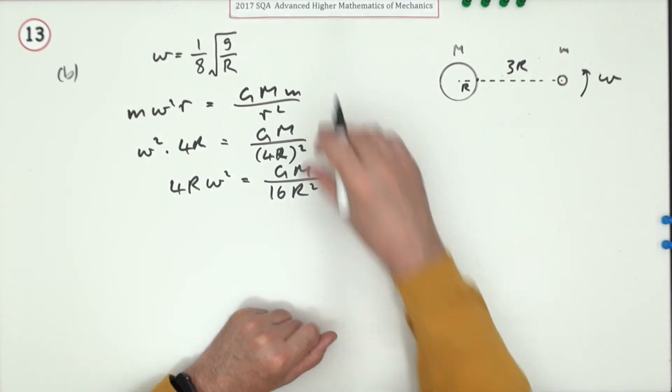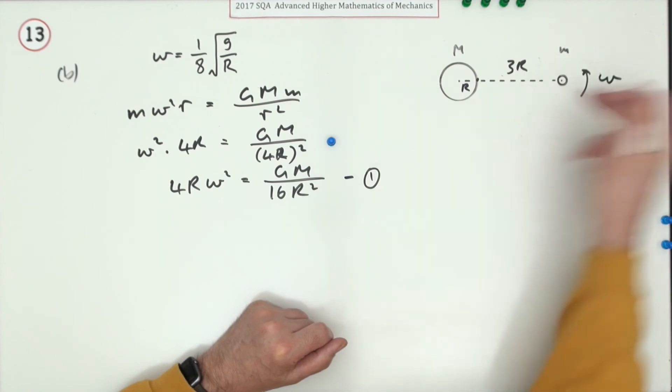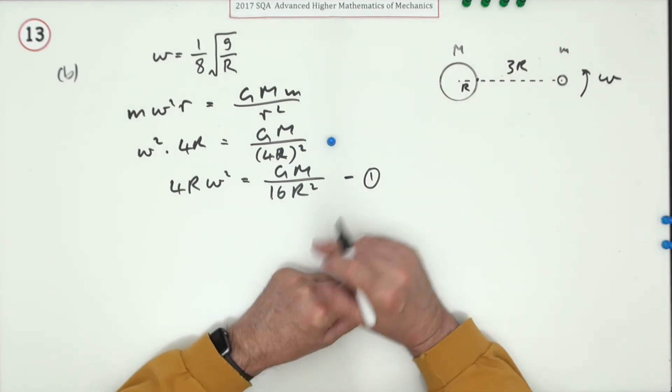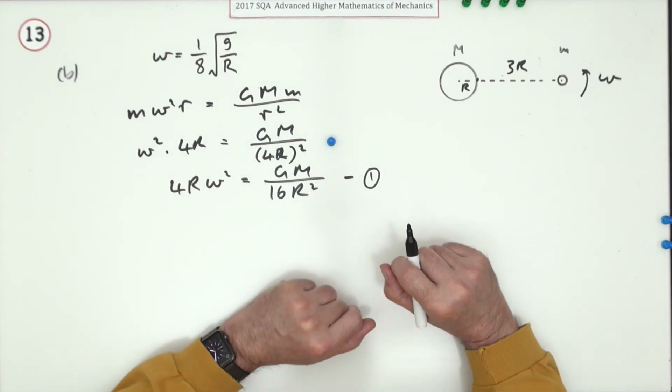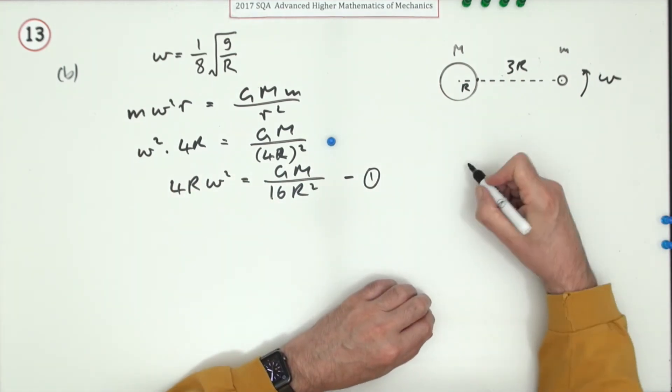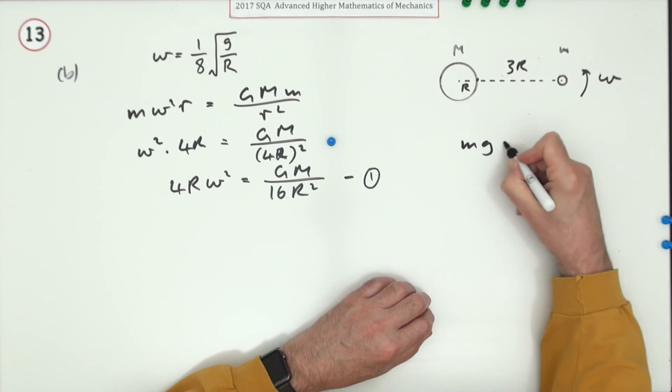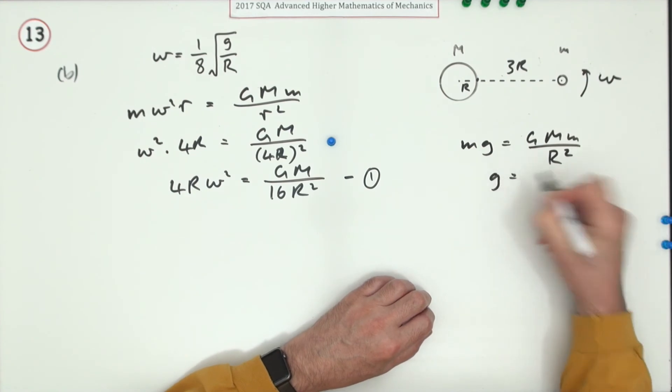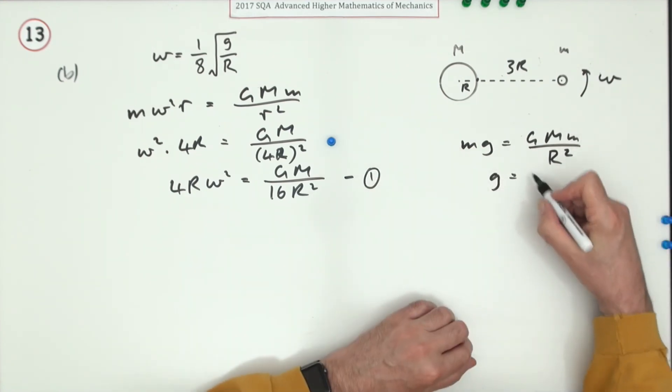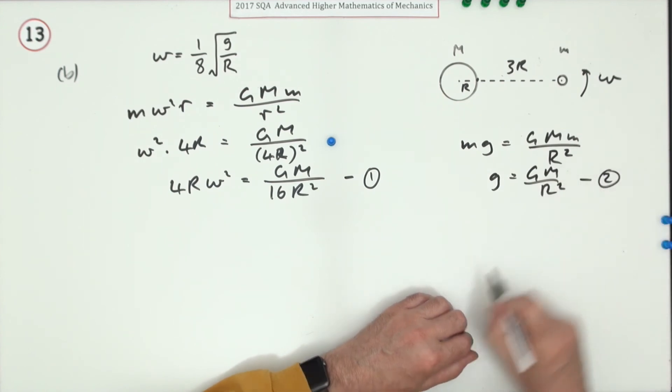But I need this g incorporated and not these constants, so I'll just go back to the surface. At the surface, mg equals GMm upon capital R squared. So that gives me an expression for g. Knock out the small m's: GM over r squared. There's a second equation.